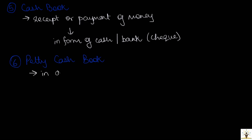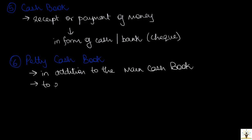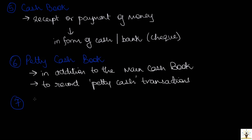The sixth book is the petty cash book. The business may maintain a petty cash book in addition to the original cash book to record petty cash transactions. Small value payments may be recorded in this book and not in the main cash book. Finally, the business also maintains the journal register — this is the residual book. Any transactions that do not fit in any of the above categories are recorded in the journal register.